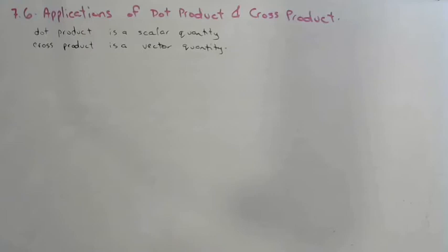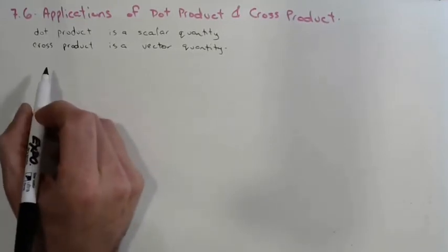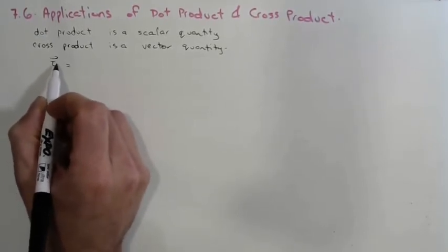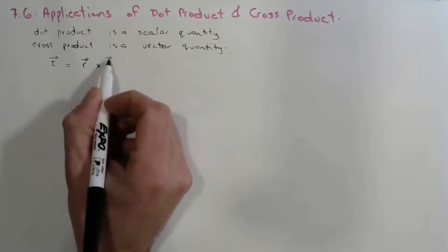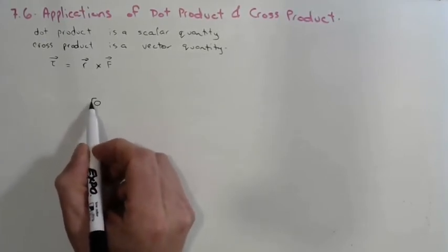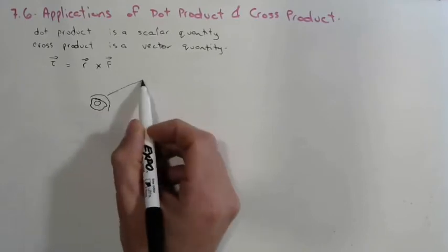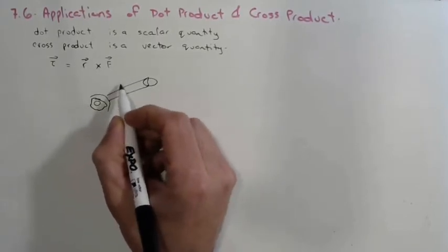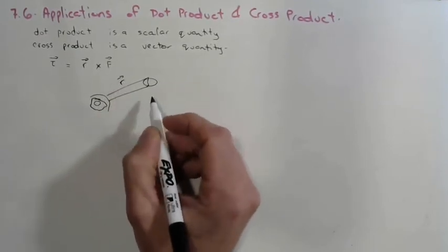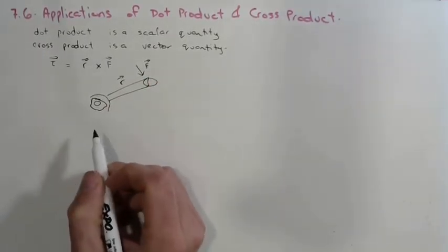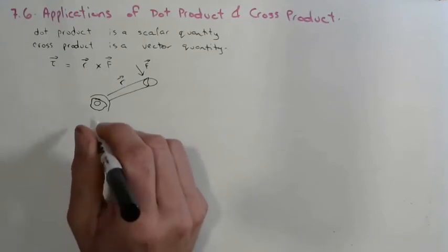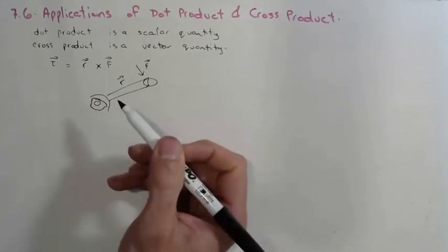We use the cross product in order to determine the torque or the moment of something. One of the formulas we're going to be using is tau — the vector tau, which is the moment or the torque — is equal to R cross F. In this situation, think of a bolt and a wrench: the length of the wrench is R, the force enacted on it is F. Use the right-hand method to determine whether the torque is bringing the nut down into the page or loosening it up off the page.